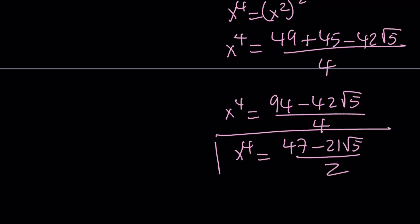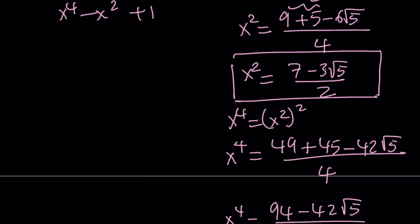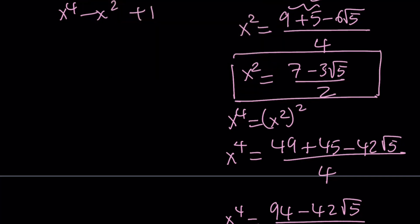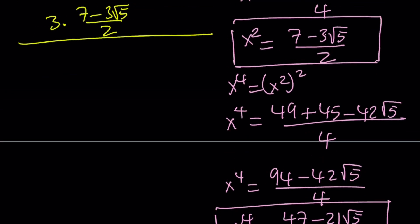Now I'm ready to plug those into my expression. Let's go ahead and do that now. So I'm going to replace x squared with 7 minus 3 root 5 over 2. And then at the bottom, I have x to the fourth, which can be written as 47 minus 21 root 5 over 2, minus x squared, which is 7 minus 3 root 5 over 2. And then plus 1, which I can write as 2 over 2, so that we have a common denominator.